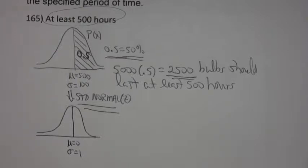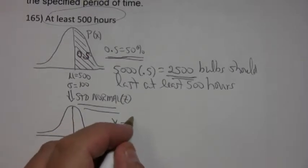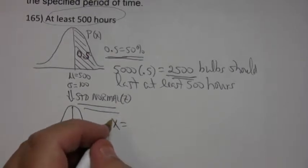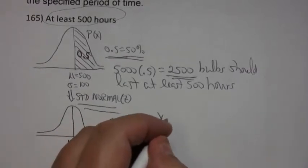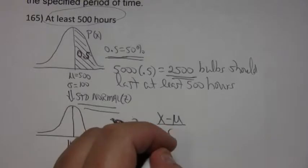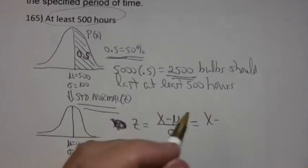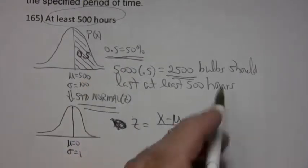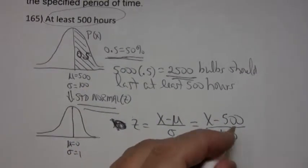And if you just go through the process, you say, well, I know my conversion formula is to change something to a z value. I take the x value, subtract the mean, and divide by the standard deviation, which in this particular problem means I subtract the mean, which is 500, and divide by the standard deviation, which is 100.